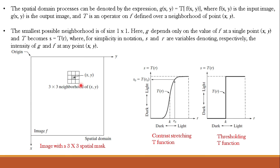For example, if operator T is defined as computing the average intensity of the neighborhood, then g(x,y) is computed as the sum of f(x,y) and its 8 neighbors divided by 9 — averaging the pixel intensities. The origin of the neighborhood moves to the next location and the procedure repeats. Typically the process starts at the top left and proceeds pixel by pixel in a horizontal scan, one row at a time. When the neighborhood origin is at the border, part of it resides outside the image, requiring padding with zeros or ignoring outside neighbors. This procedure is called spatial filtering.